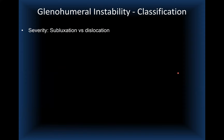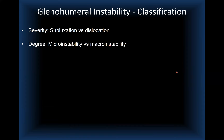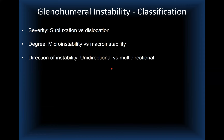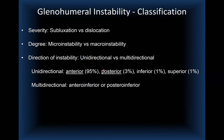Glenohumeral joint instability can be classified by severity (subluxation vs. full dislocation), degree (micro- vs. macro-instability), and direction (unidirectional or multidirectional). Anterior instability accounts for 95% of cases, posterior for 3–5%, and inferior and superior dislocations are very rare. Multidirectional instability can be anteroinferior or posteroinferior.